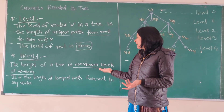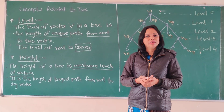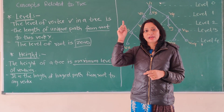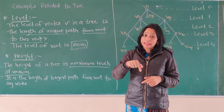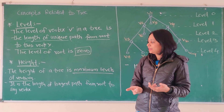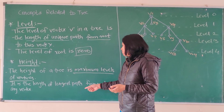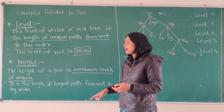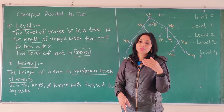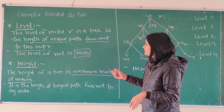The maximum level is the length from the root vertex to the leaf node — that is the maximum level of the tree. And that is why height is defined as the length of the longest path from the root to a particular vertex.